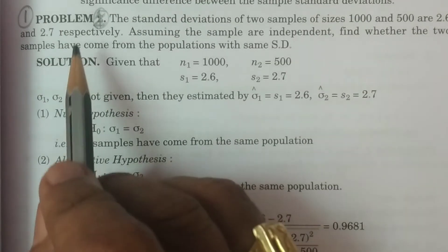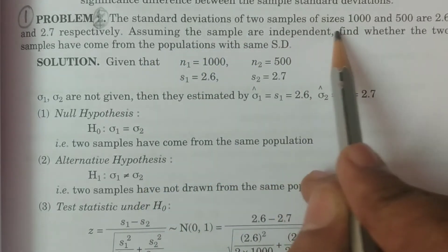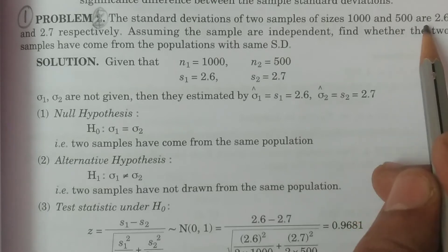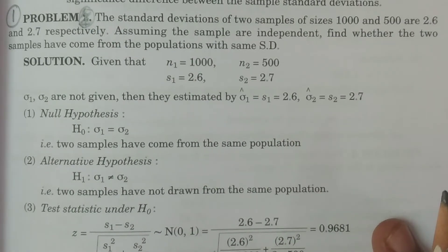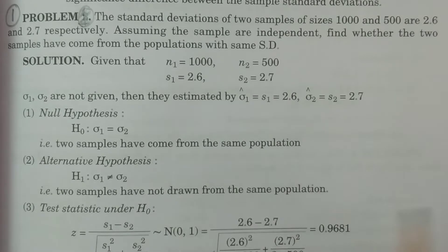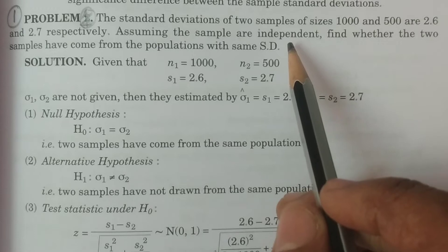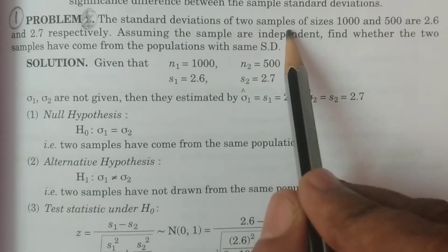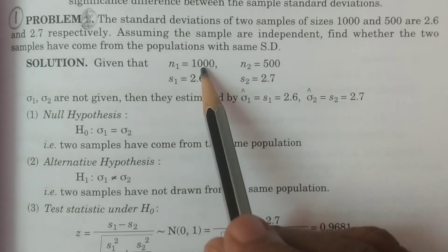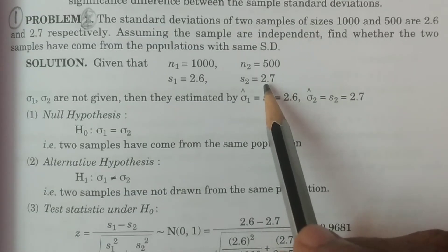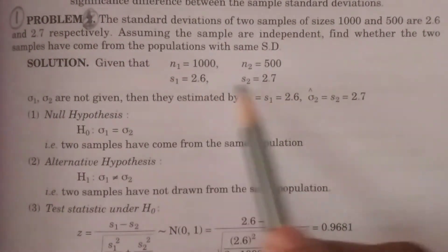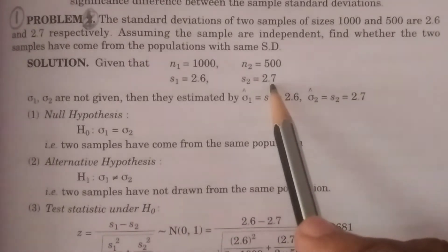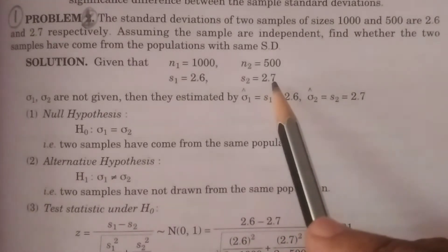Problem one: The standard deviations of two samples of sizes 1500 are 2.6 and 2.7 respectively. This is a problem of two sample test. The two samples are given: n1 = 1000, n2 = 500. The standard deviations are s1 = 2.6 and s2 = 2.7 respectively.